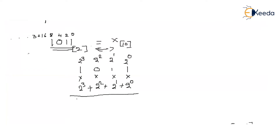To convert 1011 to decimal, multiply each digit by its weight and add. 2^0 = 1, 1×1 = 1; plus 2^1 = 2, 1×2 = 2; plus 2^2 = 4, 0×4 = 0; plus 2^3 = 8, 1×8 = 8. So 8 + 2 + 0 + 1 = 11.